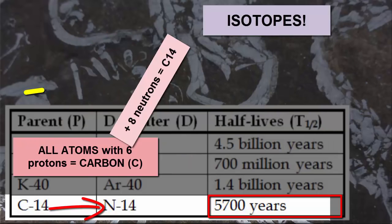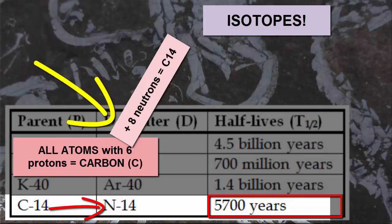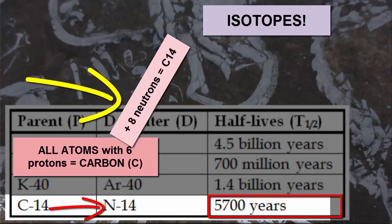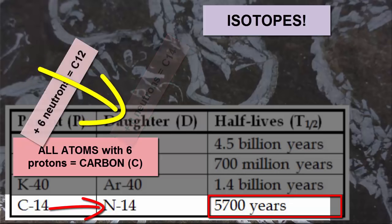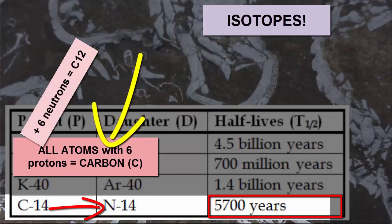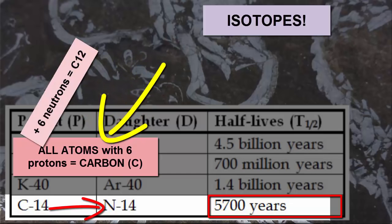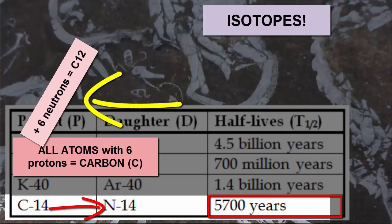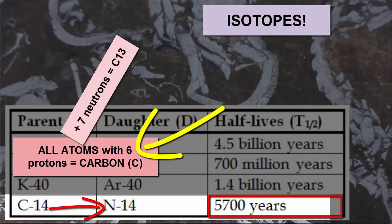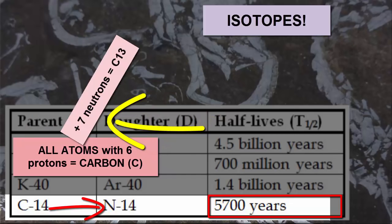Carbon-14 is a carbon isotope with six protons and eight neutrons — total 14. Carbon-12 is a carbon isotope with six protons and six neutrons — total 12. Carbon-13 is a carbon isotope with six protons and seven neutrons — total 13.